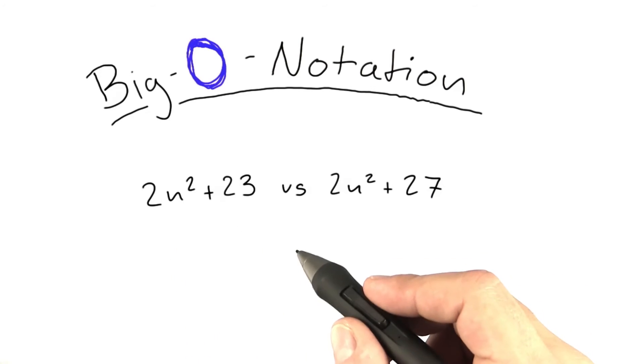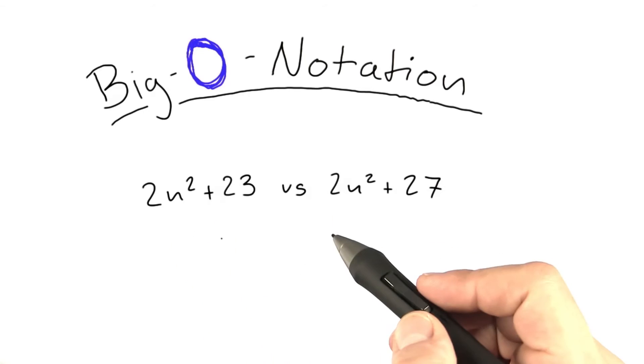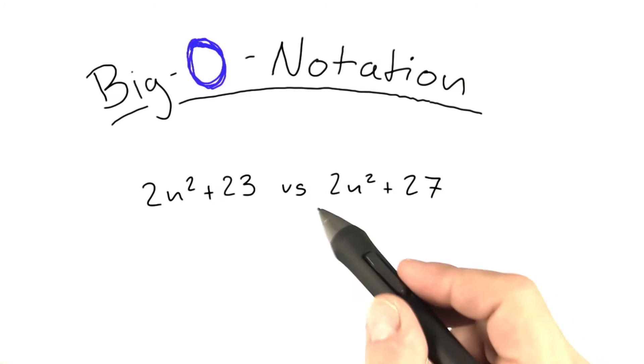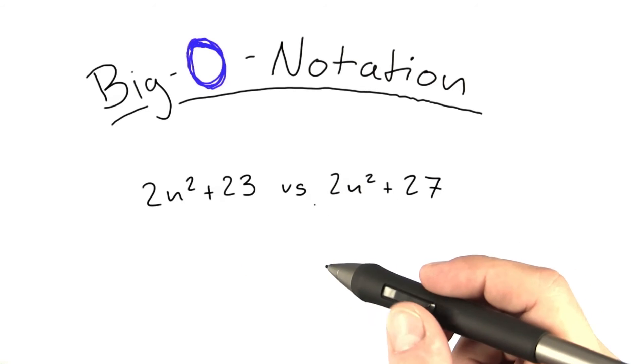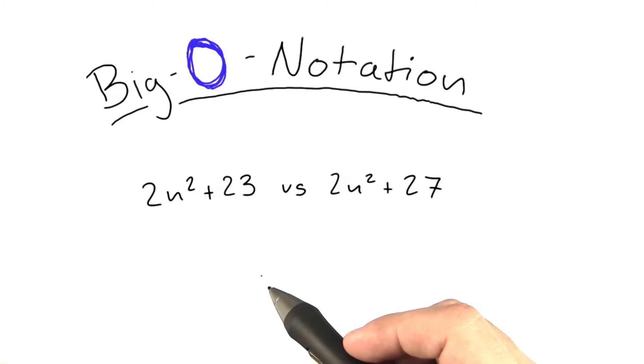So we are going to introduce a huge simplification to stating running times, and that is called Big O notation. If you've had an algorithms course before, you should already be familiar with this, but we'll review it here just to make sure you understand.